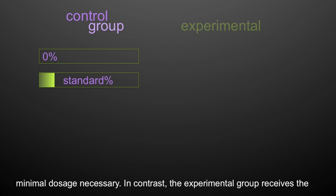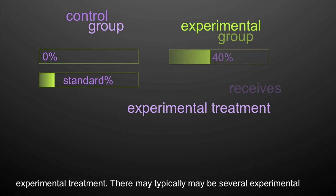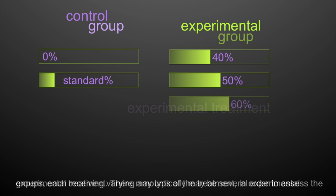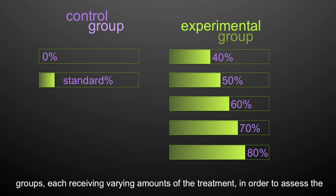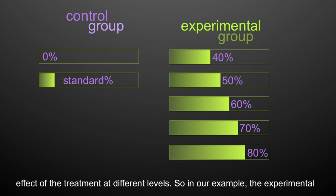In contrast, an experimental group receives the experimental treatment. There typically may be several experimental groups, each receiving varying amounts of the treatment, in order to assess the effect of the treatment at different levels.